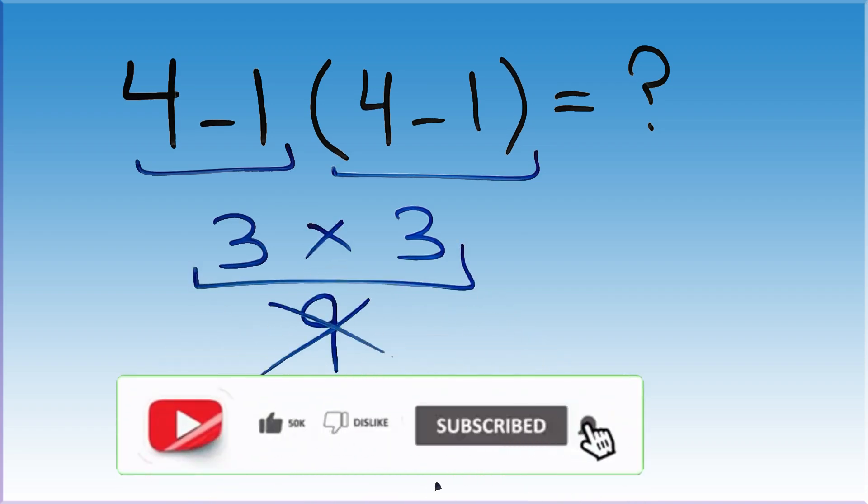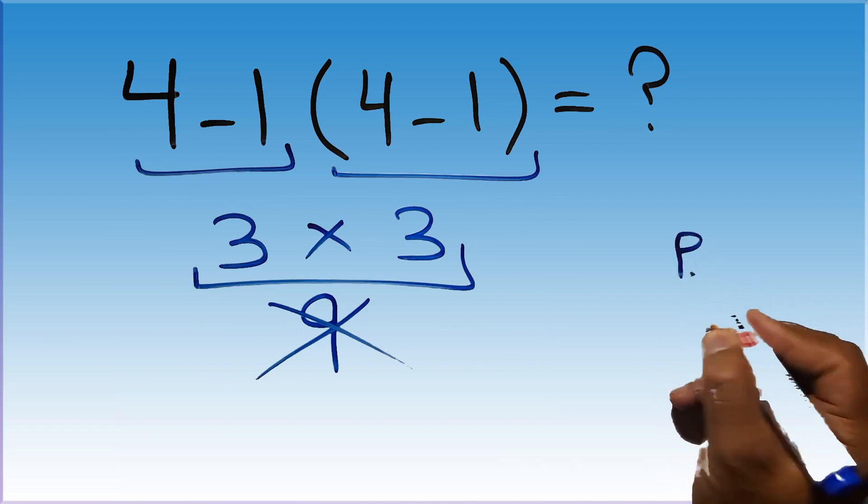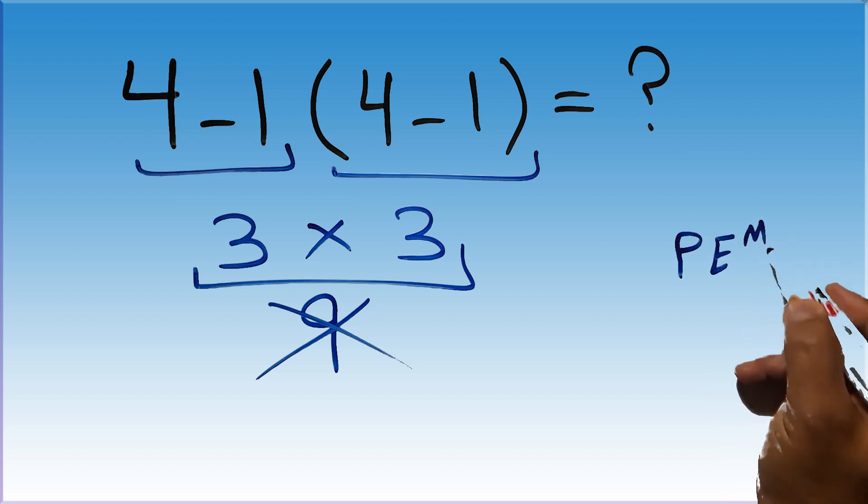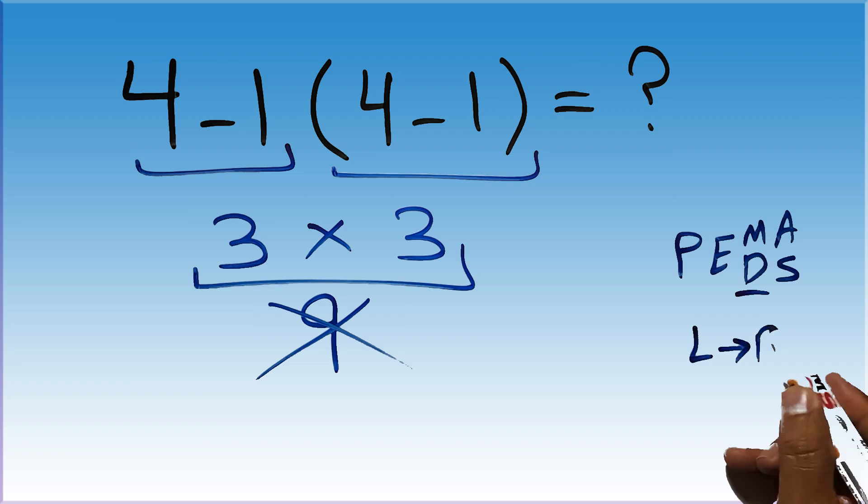Because according to the order of operations, first we have to do parentheses, then exponent, then multiplication or division, and finally addition or subtraction. Remember that multiplication and division have equal priority, and we have to work from left to right, and the same applies to addition and subtraction.